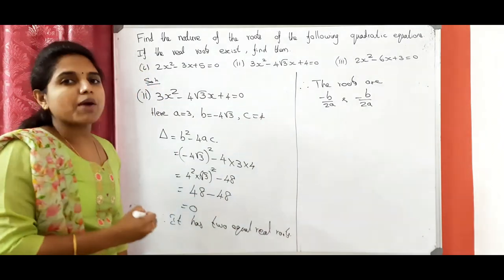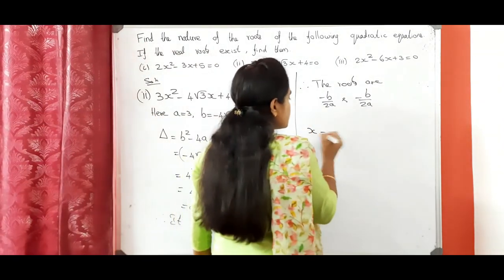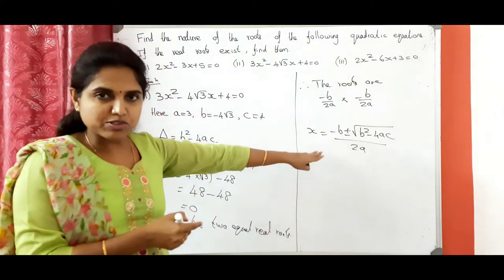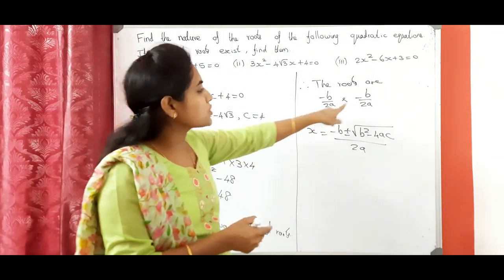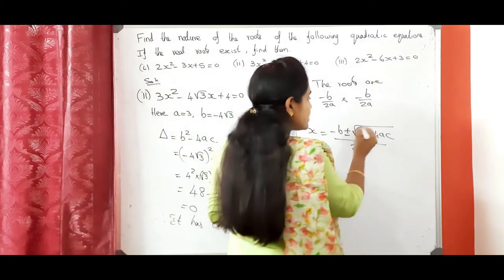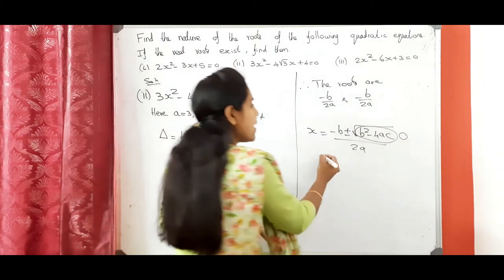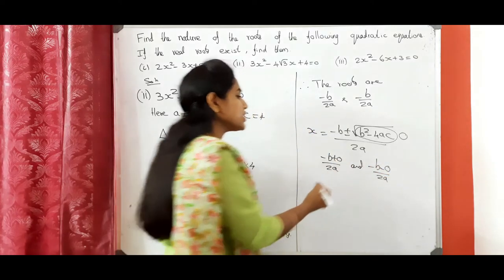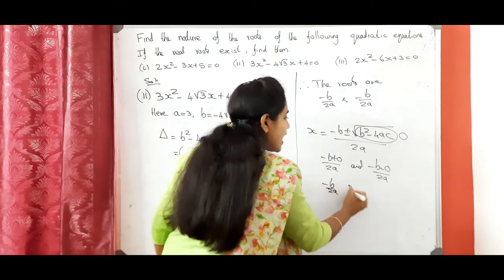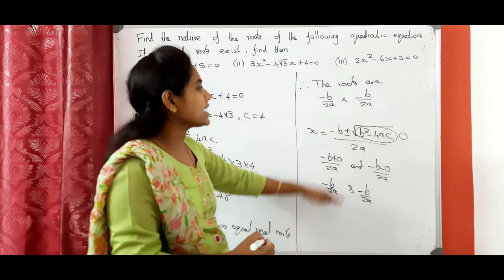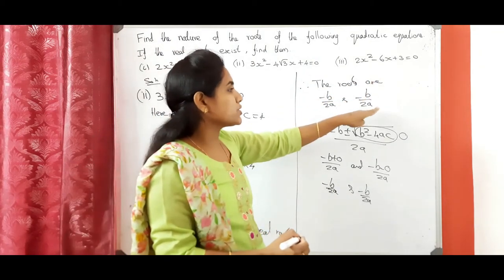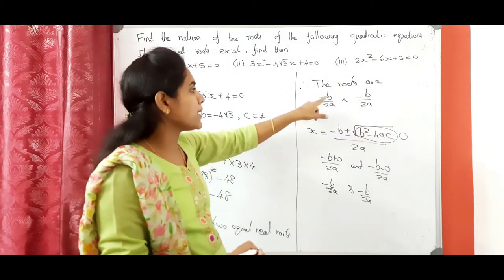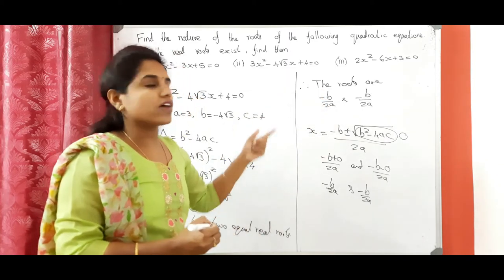Why minus b by 2a? The formula for finding the roots is x equals minus b plus or minus root of b squared minus 4ac divided by 2a. But here b squared minus 4ac is 0, so the two roots become minus b plus 0 divided by 2a and minus b minus 0 divided by 2a. Adding or subtracting 0 gives the same result — minus b by 2a and minus b by 2a. Now we need to apply the b and a values to find the roots of the given equation.